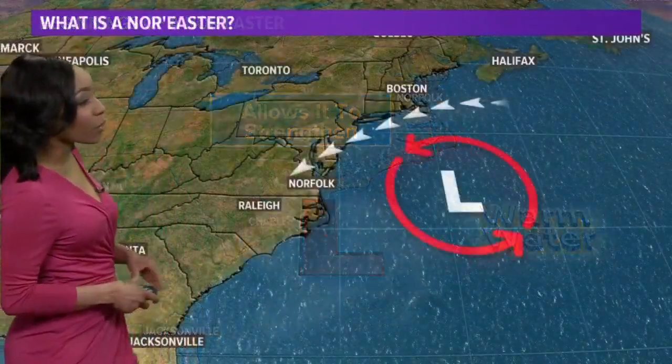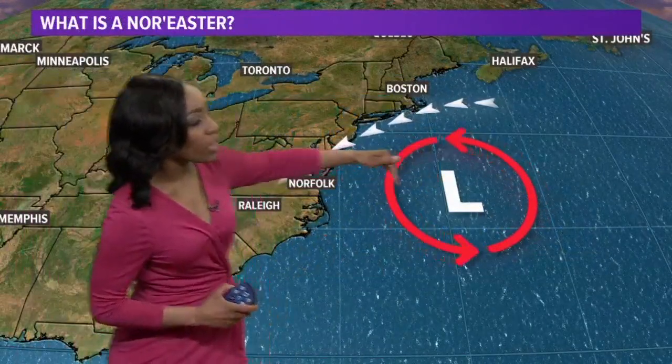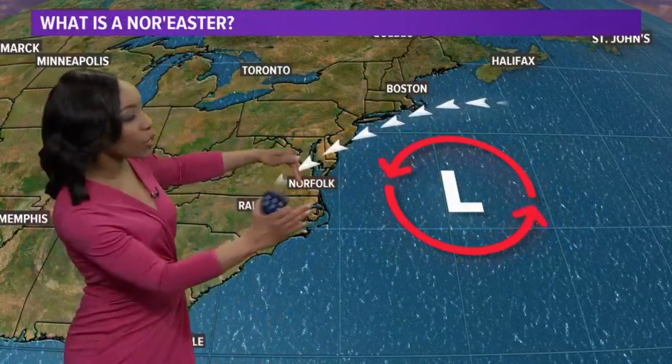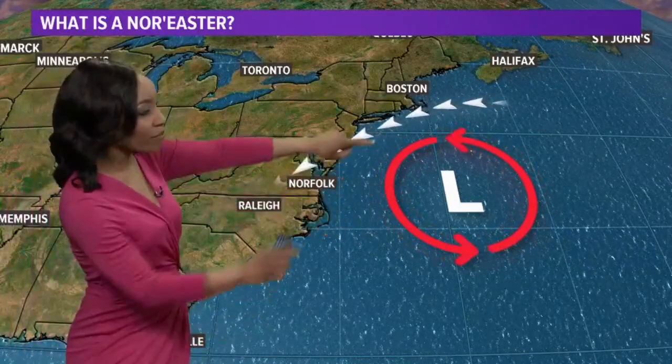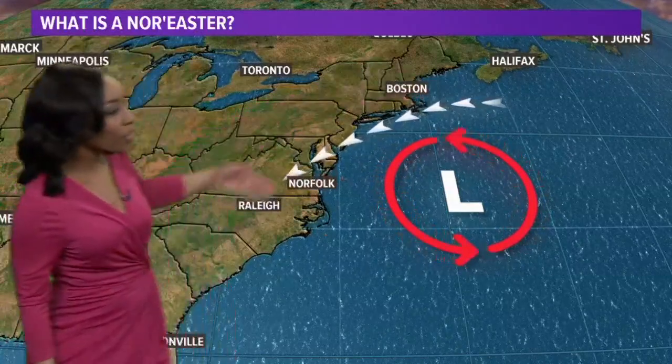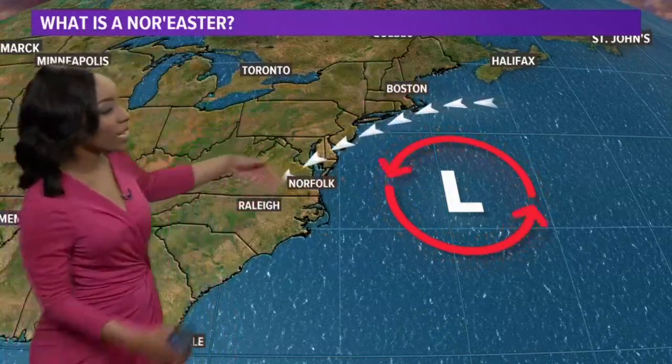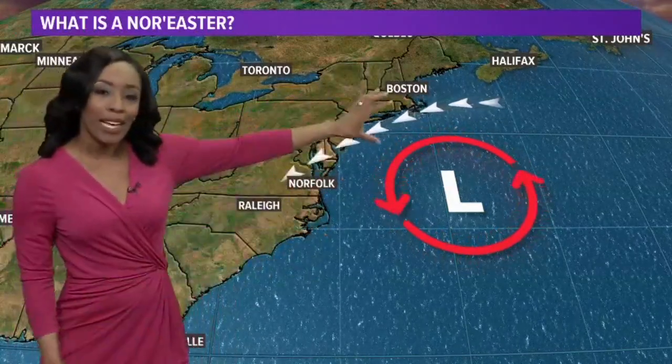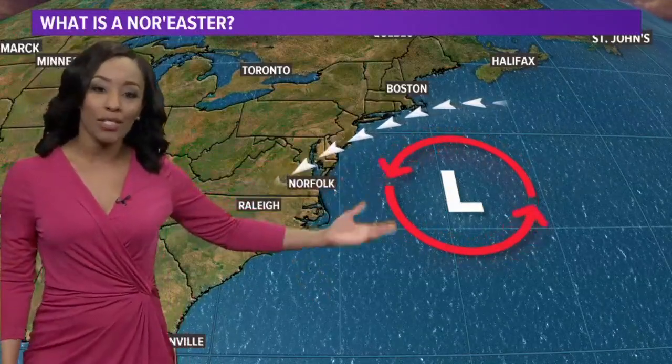The nor'easter starts to move generally to the north and east as the westerly winds push the storm out to sea. The nor'easter gets its name because of the wind flow — the winds come out of the north and east, and as it does, especially with our area, it tends to kick up the seas, which leads to flooding.